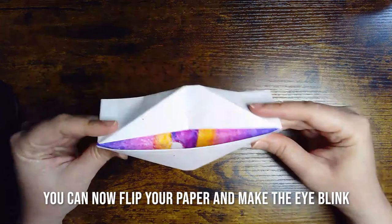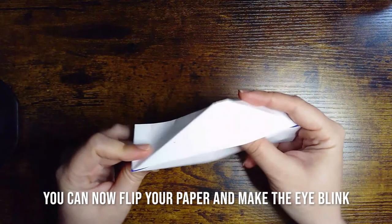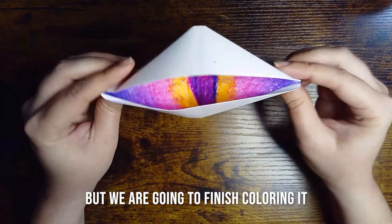Once you have finished that step, you should be able to flip your eye upside down and make it blink. But we're going to go ahead and put it back down and finish coloring it.